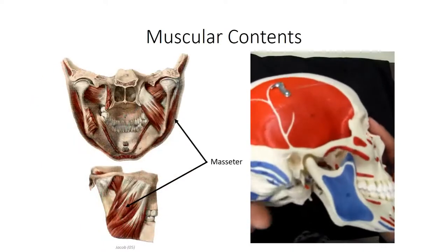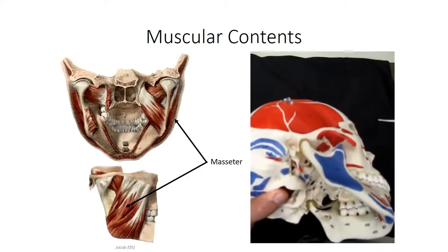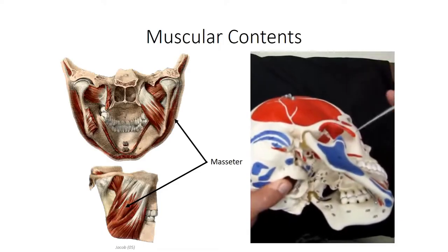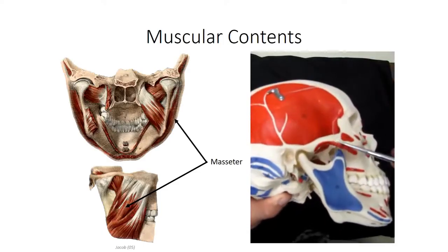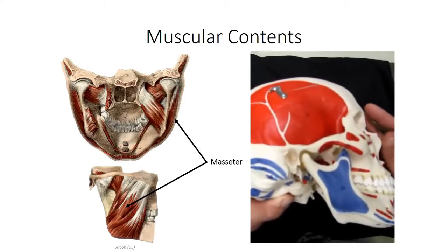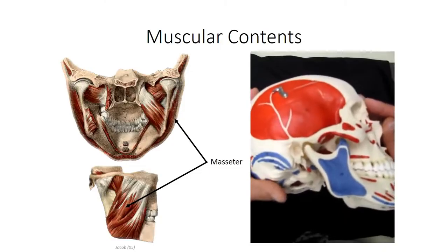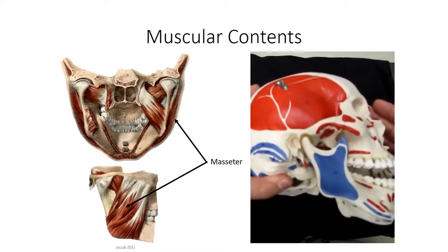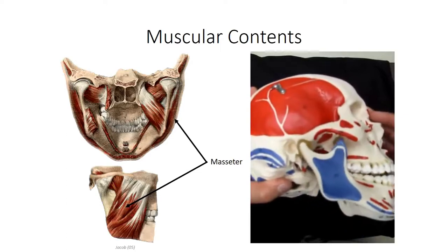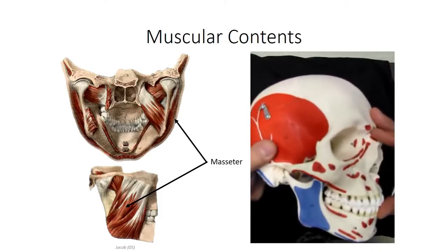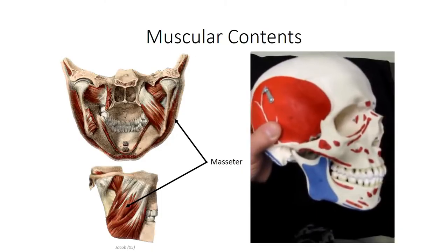The masseter muscle serves a similar function. The muscle originates off both the superficial and deep surfaces of the zygomatic arch, with the fibers projecting inferiorly to insert broadly on the external surface of the ramus of the mandible. So the majority of the muscle is found just outside the infratemporal fossa. Contraction of the masseter serves to elevate the mandible and close the jaw. The masseter is easily observed and palpated through surface anatomy, particularly when the jaw is clenched shut.